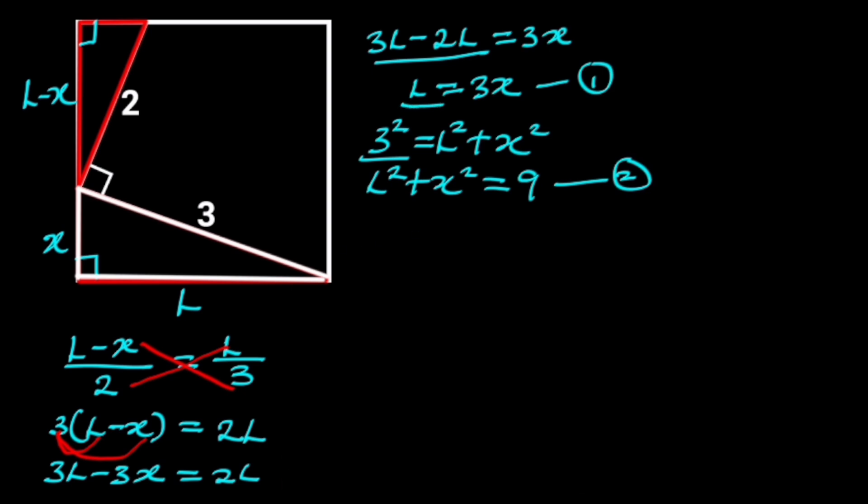From equation 1, we are going to express X in terms of L, doing so will give us X is equal L over 3. Let's call this equation 3. Next, we will substitute X with L over 3 in equation 2. It follows that L squared plus L over 3 squared is equal to 9.